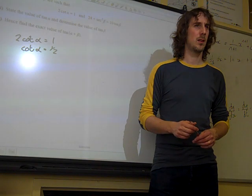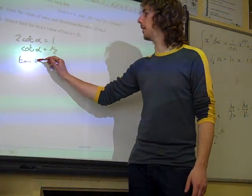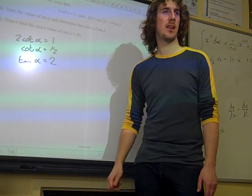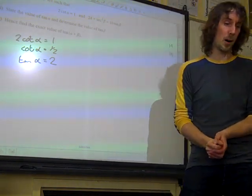What does cot mean? 1 over tan. So take the reciprocal of both sides, and we've got tan alpha is 2. That is such a nice mark there.